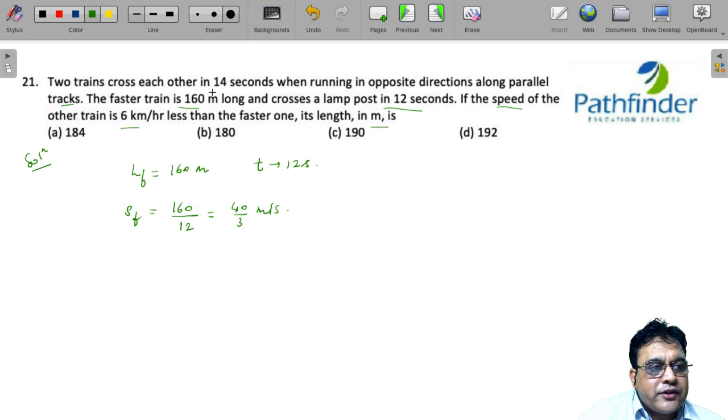Similarly, there are two trains which cross each other in 14 seconds when running in opposite directions along a parallel track. So, the speed of the other train, the speed of the slower train is 6 kilometer per hour less.